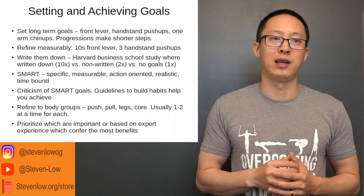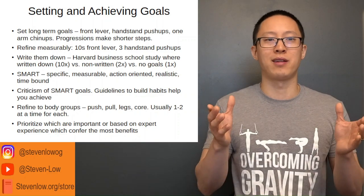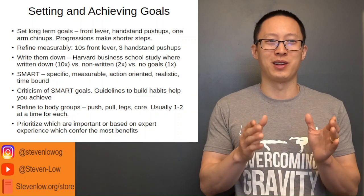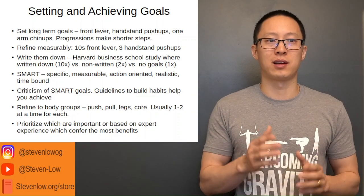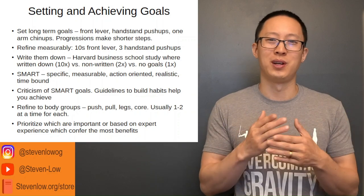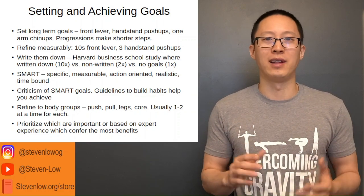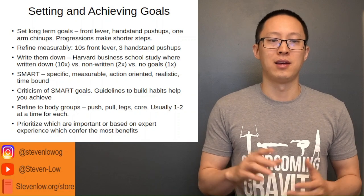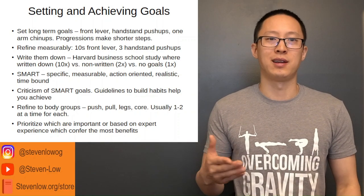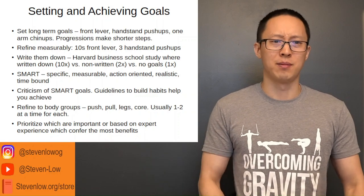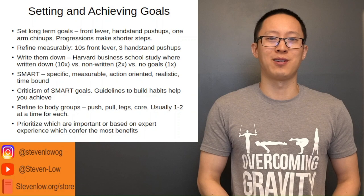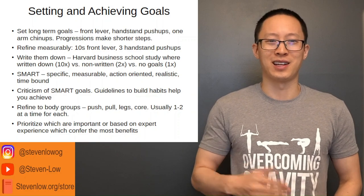Generally speaking, those are the main points for setting and achieving goals. You want to write down your goals first in terms of what you want to be able to do in the future, then categorize them into upper body push, upper body pull, legs, core, and skill, and use that framework to build your routine. We're going to end here and go into the next part of the series in the next video.